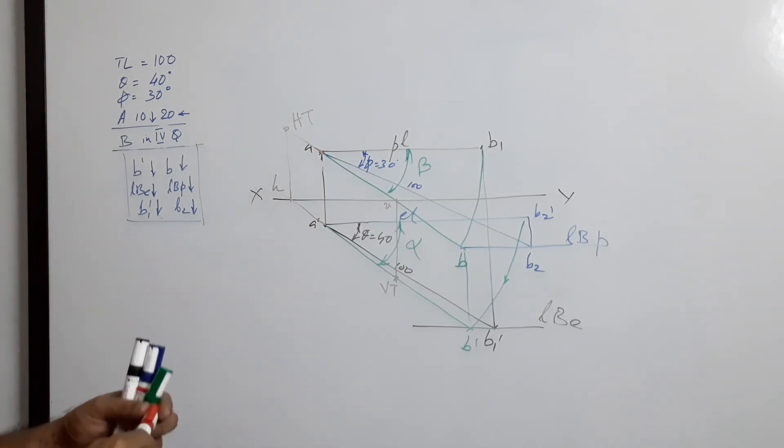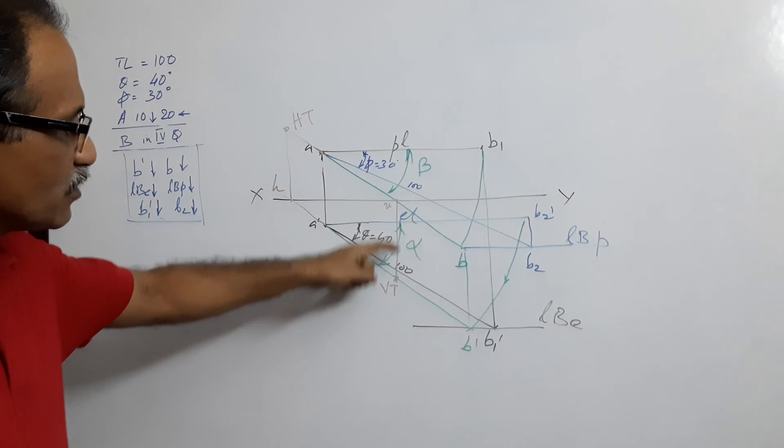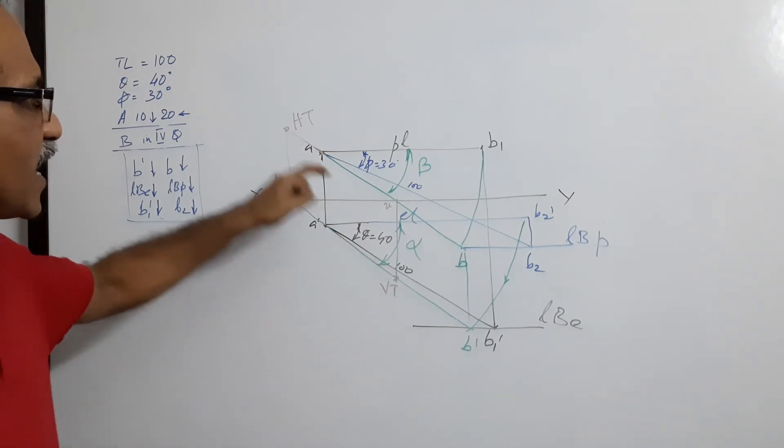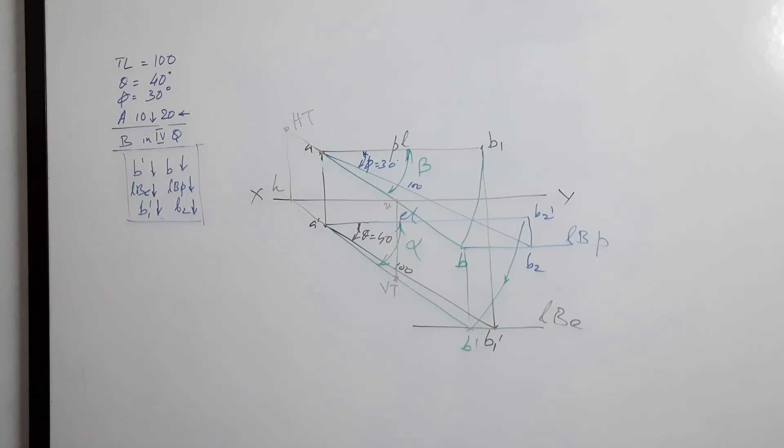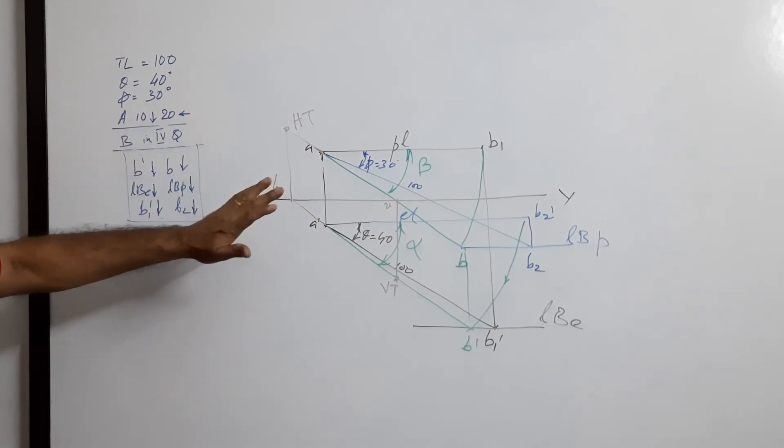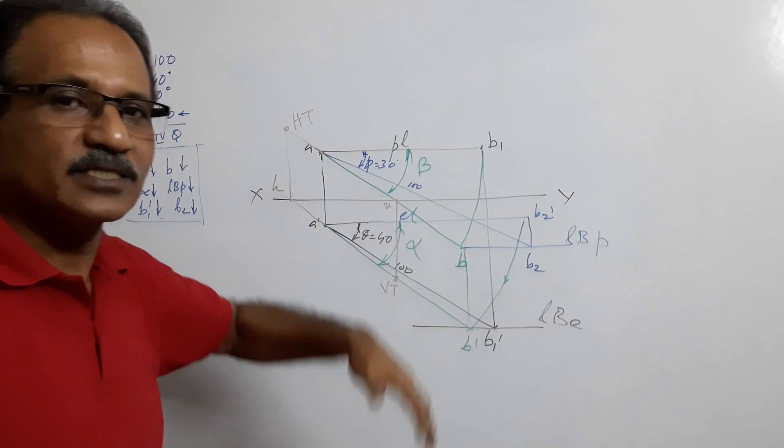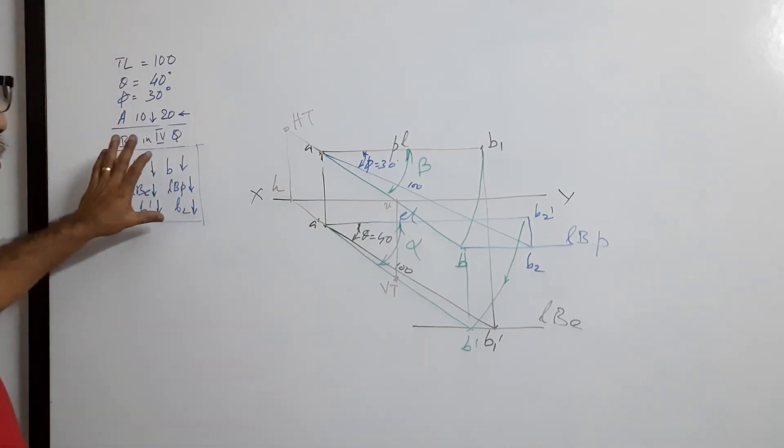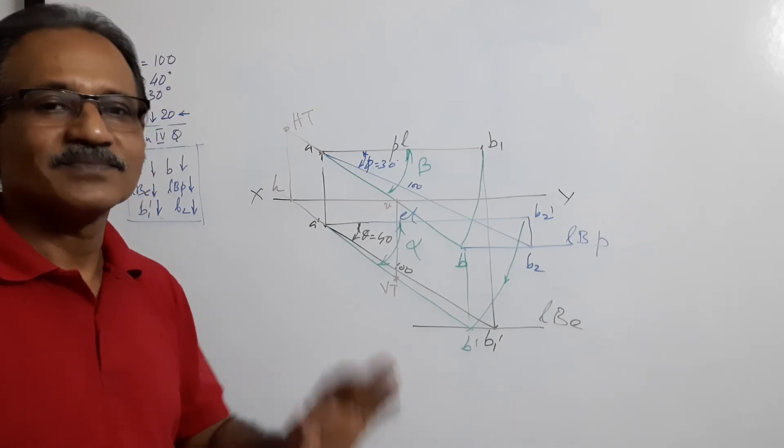What answer will you give? You will say VT is this much distance below HP and HT is this much distance behind VP. Once you locate the given point, the direction in which we draw is the complicated thing which will be decided based upon this. I hope you understand. Thank you.